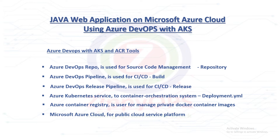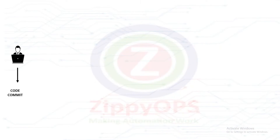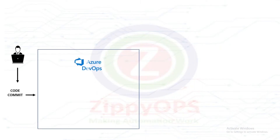Let's explore the workflow of Java application deployment stage by stage. In the first stage, the Azure pipeline pulls the Java application code from Azure DevOps repo, builds it, and stores the build package as an artifact.